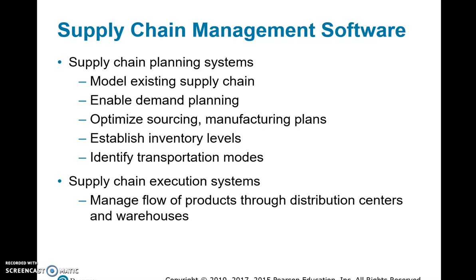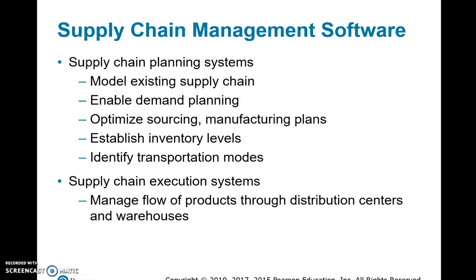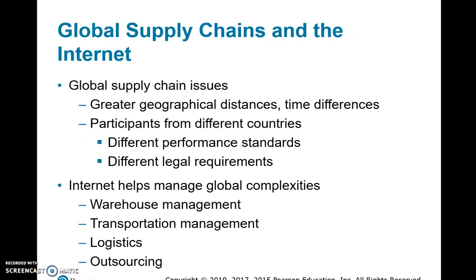Supply chain management has two main types of software: supply chain planning systems and supply chain execution systems. Planning systems have models that support demand planning, optimizing sources, manufacturing plans, inventory levels, and both inbound and outbound logistics. Supply chain execution systems manage the flow of products through distribution centers and warehouses — essentially everything going downstream.